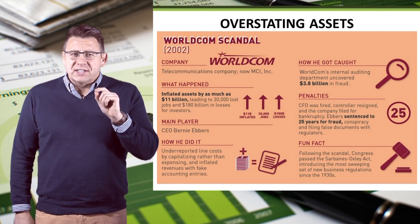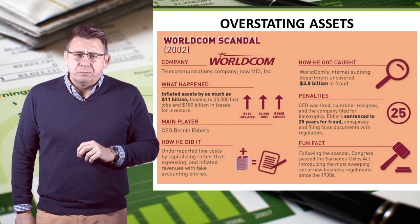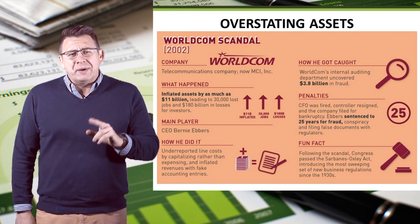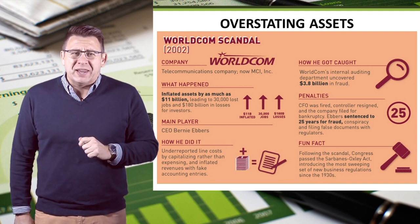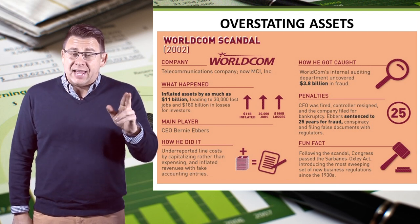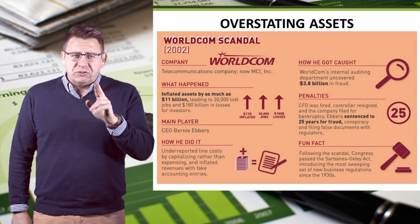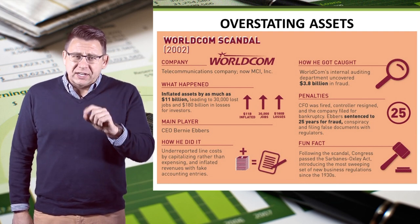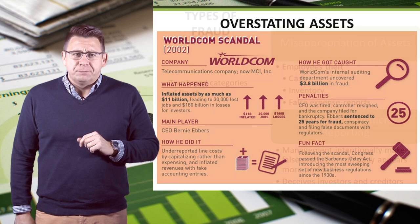Overstating assets is another way to commit accounting fraud. WorldCom recorded about $11 billion in expenses as assets. Think about that journal entry — instead of debiting an expense, they just debited an asset.